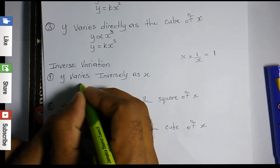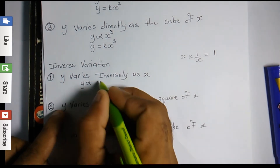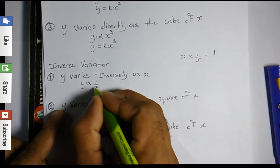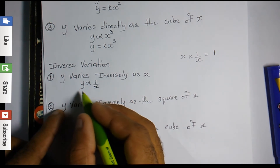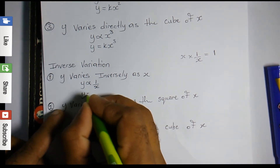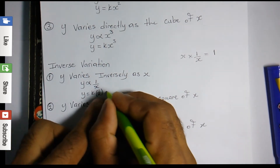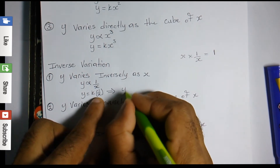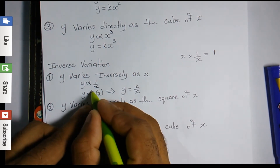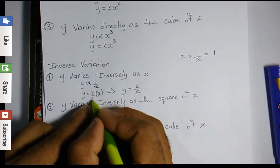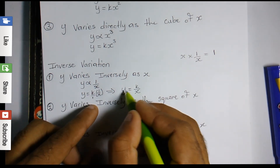'Y varies inversely as x' — inversely means 1 over x. Remembering that when we change the variation sign to an equal sign we introduce a constant, we get y equals k times 1 over x, which is the same as y equals k over x. The k is treated as a whole number, so k over 1 times x gives k over x.